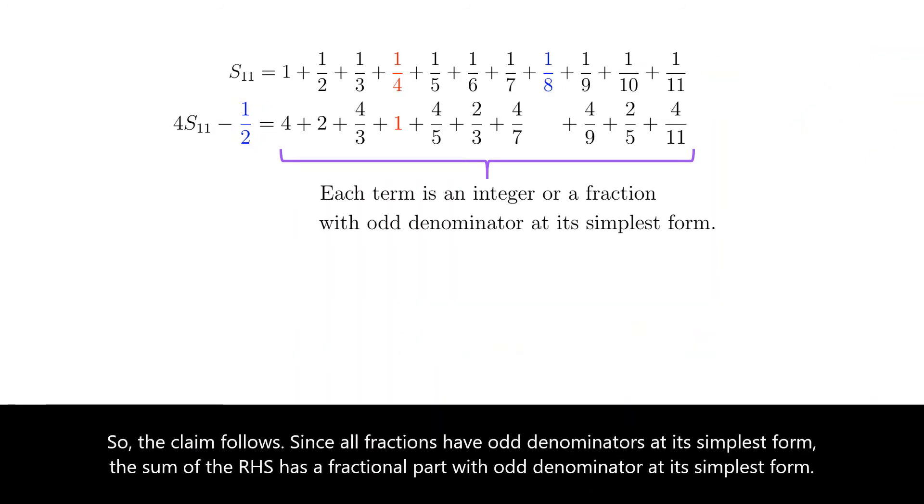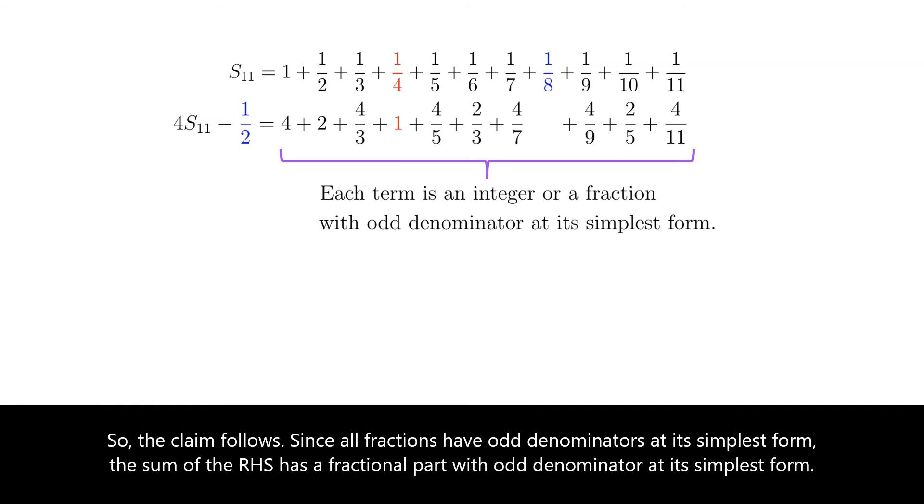So the claim follows. Since all fractions have odd denominators at its simplest form, the sum of the right-hand side has a fractional part with odd denominator at its simplest form.